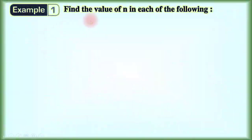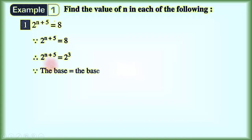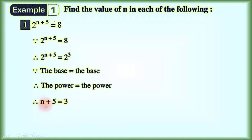Example number 1: find the value of n. Number 1: 2 power (n plus 5) equals 8. Since 2 power (n plus 5) equals 8, we can write 8 as 2 power 3. Therefore 2 power (n plus 5) equals 2 power 3. Since the base equals the base, therefore the power equals the power. Then n plus 5 equals 3, therefore n equals 3 minus 5, which equals negative 2.